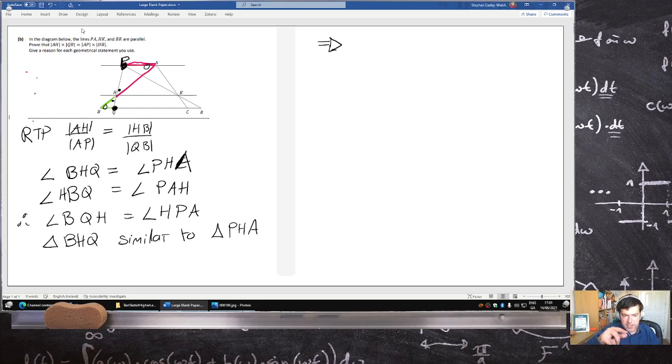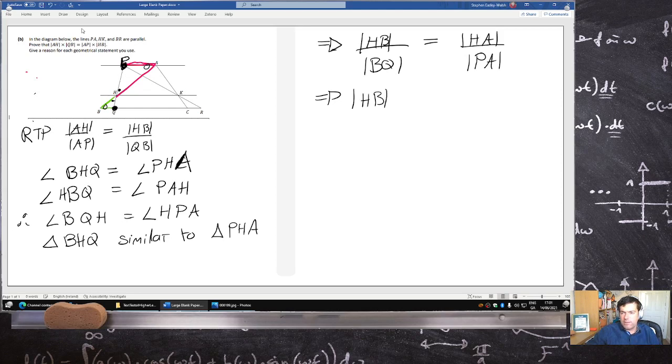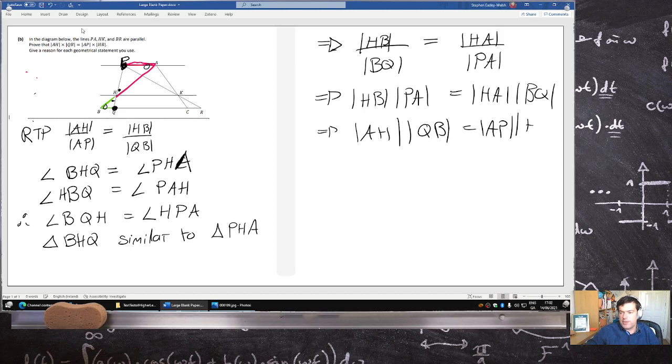So that would mean that the sides are in the same proportion. So if we look at the smaller triangle, the longest side over the shortest side, that should equal, in the other triangle as well, the longest side over the shortest side, PA or AP, whatever. So that means that HB times PA equals HA times BQ, or if I write it in the same order, AH times QB equals AP times HB.